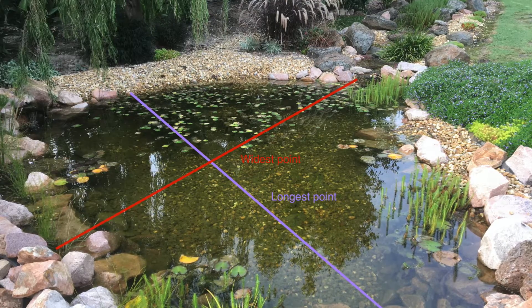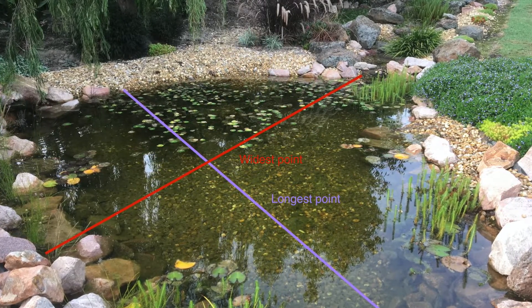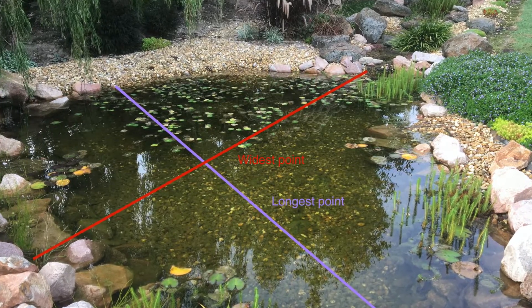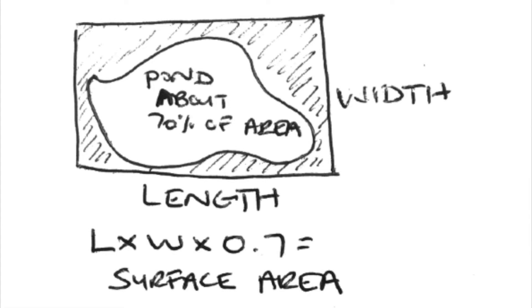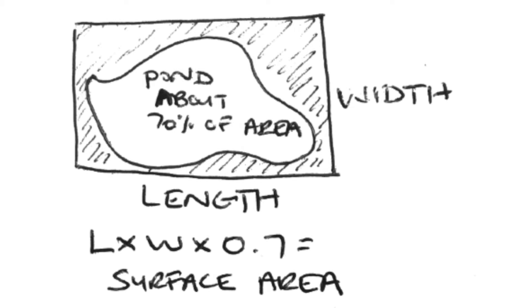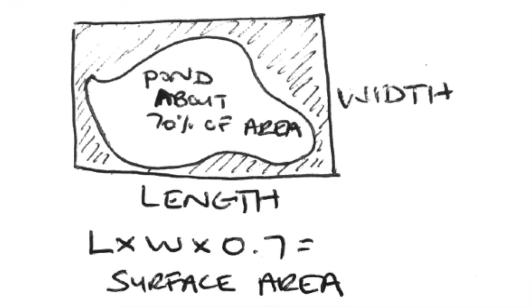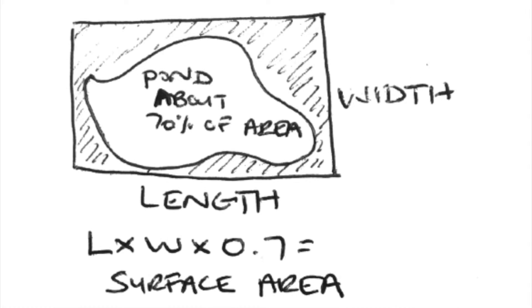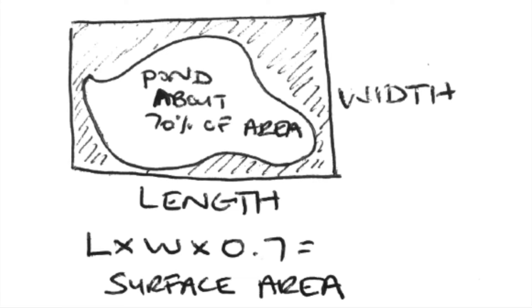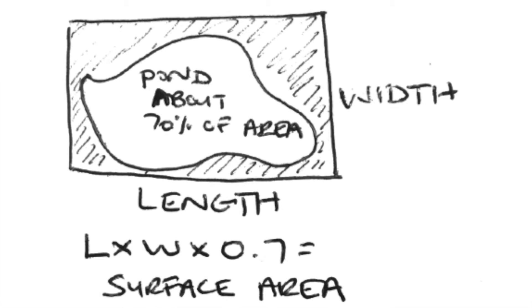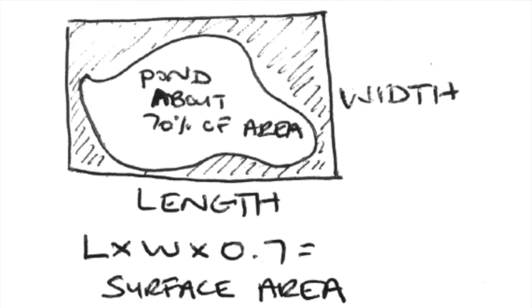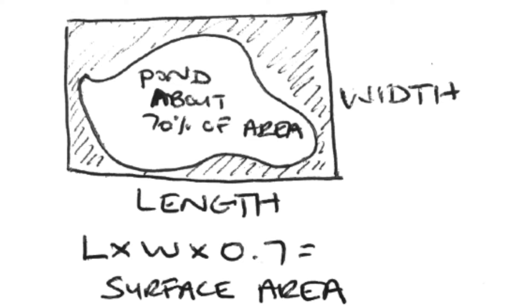With irregular shapes it gets a little bit more tricky. You still obviously need your length and your width. What I like to do is draw a little mud map and have the length and the width at those widest points, put the pond in the rectangle or square, then shade the area around it and try to work out roughly what percentage of the area the pond is. My calculation is just the length times the width times whatever decimal — in this case it was 70%, so it was 0.7.